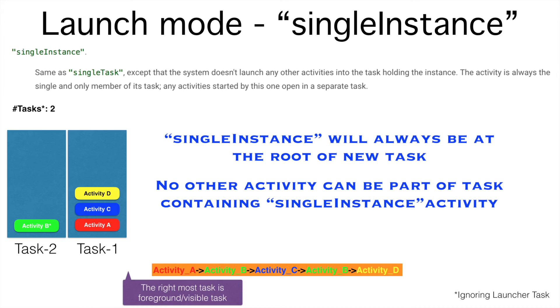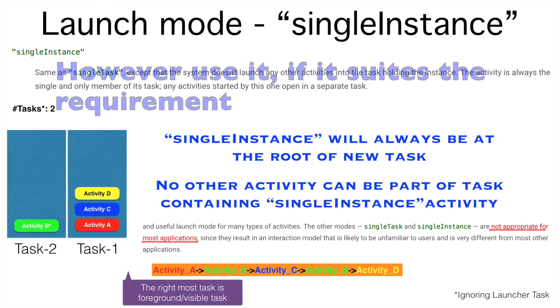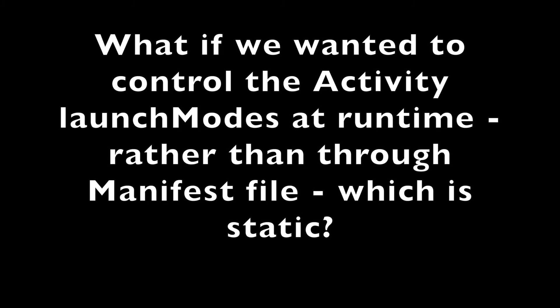Having understood this, there is another important point: Android documentation says that single task and single instance are not appropriate for most applications, because they may result in an interaction model that is unfamiliar to users. In Android, what a user expects is that when they hit the back button, they go to the previous activity — not to some unknown activity. As a developer, you need to be very sure you absolutely need this. So far we have manipulated the tasks by declaring the launch mode in the manifest file, but there is another way of doing this, which we shall discuss in upcoming videos.